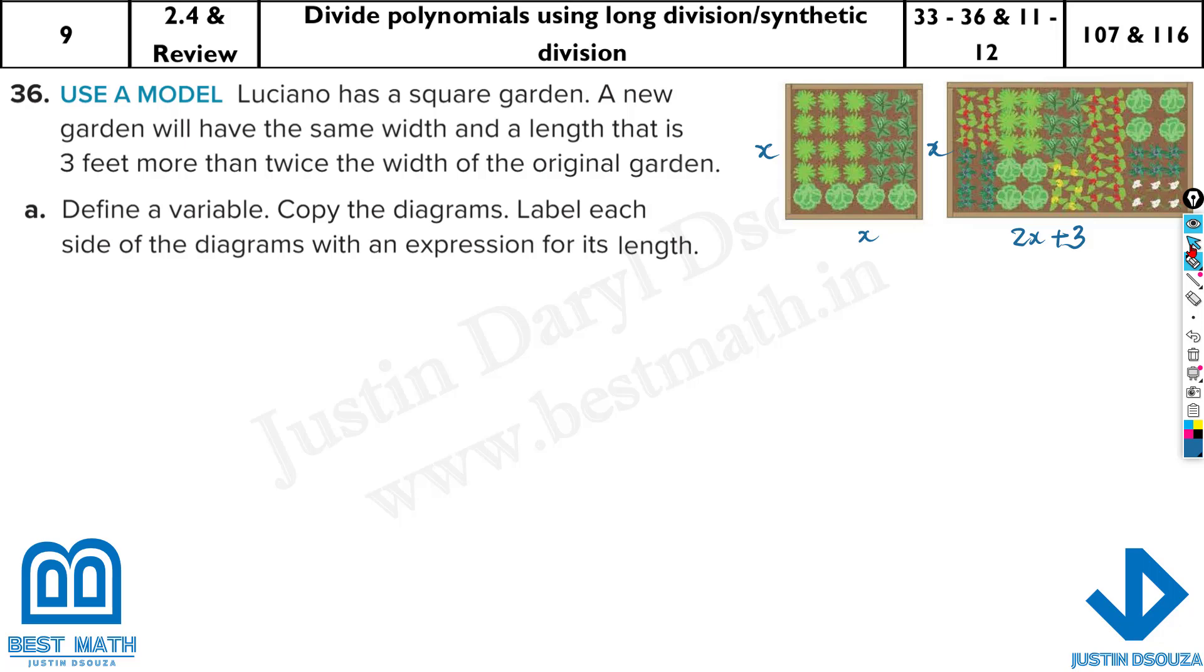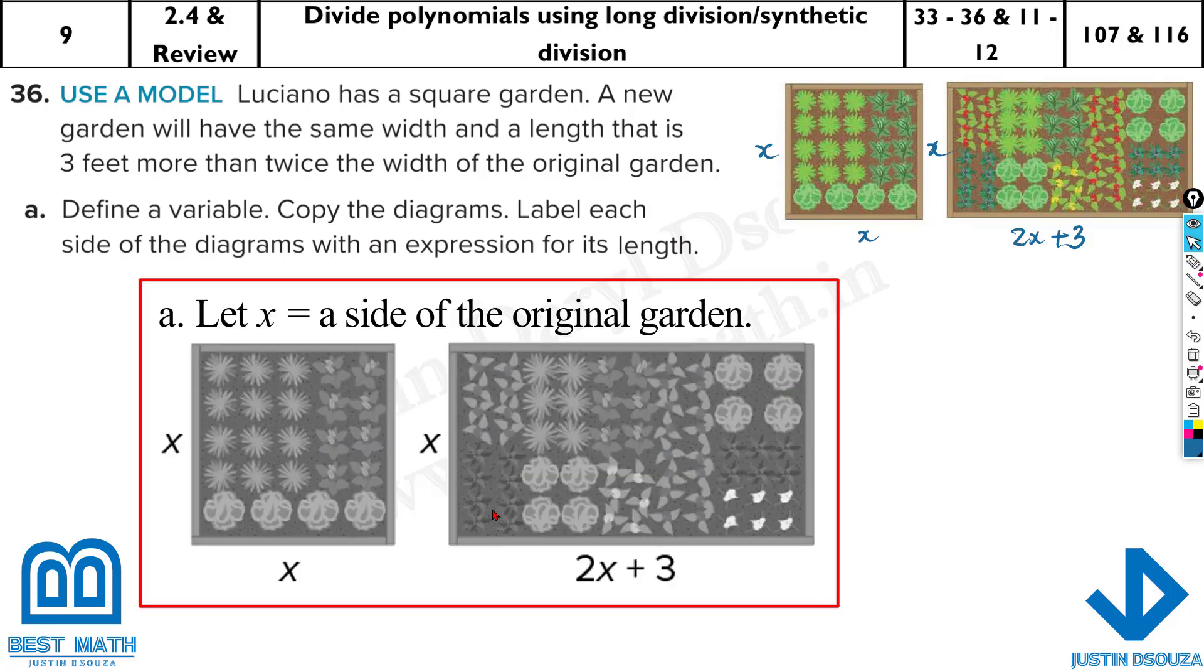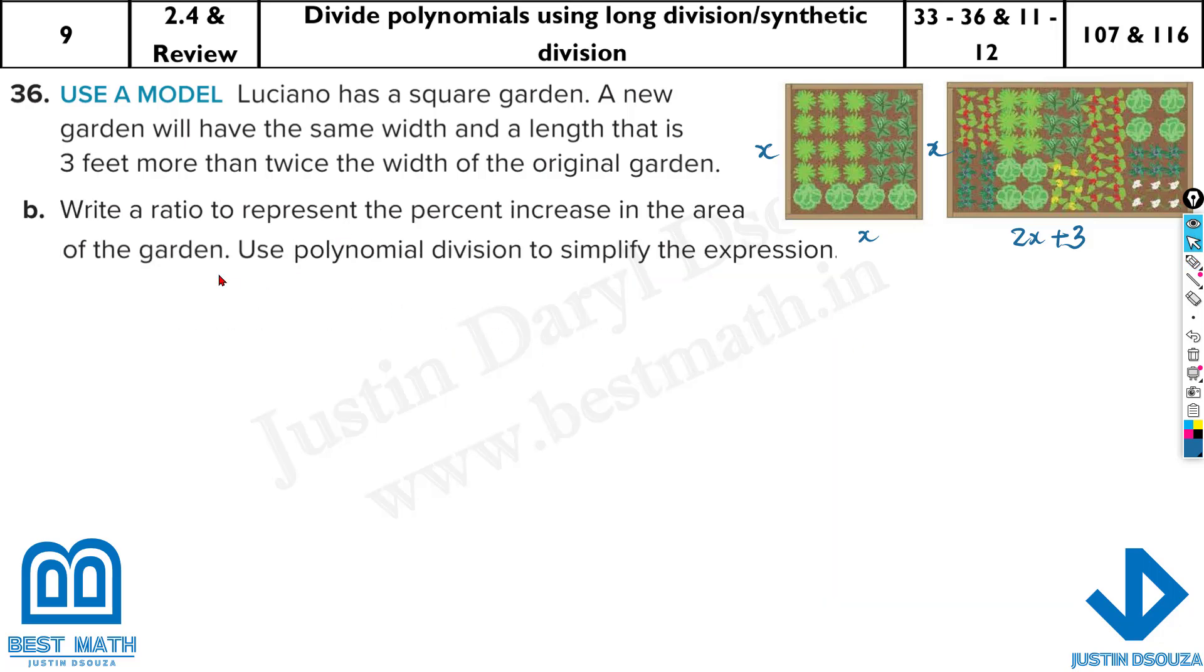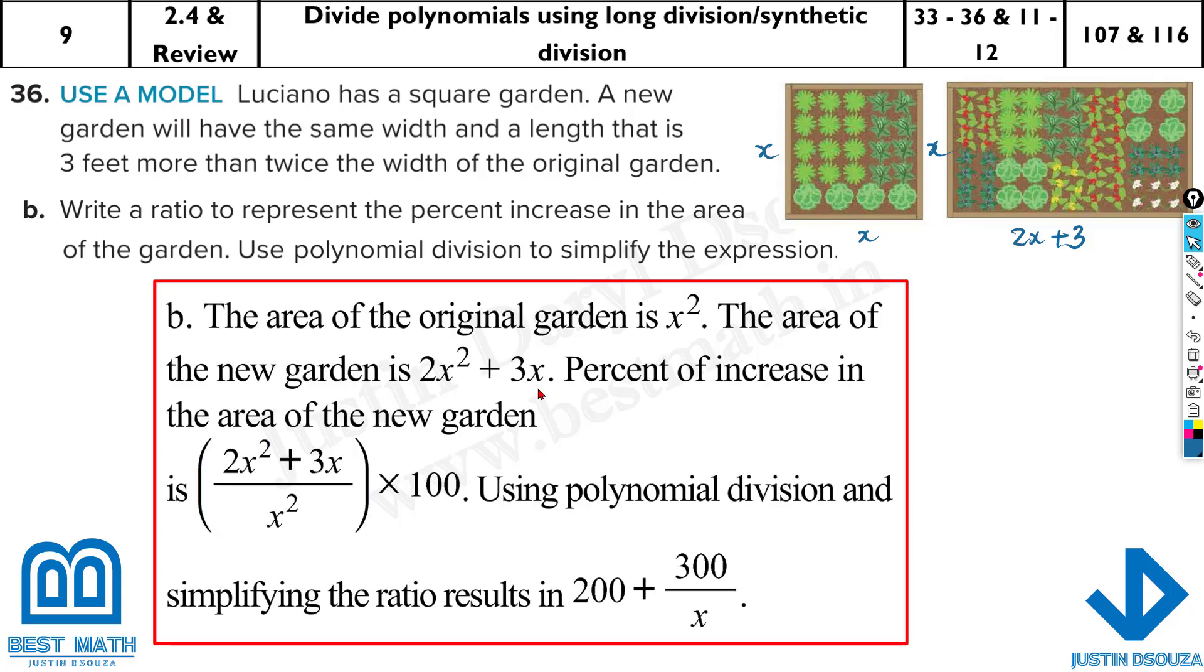What we need to do is, just try the variable. So, this is it. This is the answer. And then they're asking us to write a ratio to represent the increase in the area of the garden. So, now, they want us to know how much increase it is. So, multiply these two and divide by x^2. That's it. So, here we go. It's going to be 2x^2 plus 3x divided by x^2. Ratio. That will be the answer, the ratio.